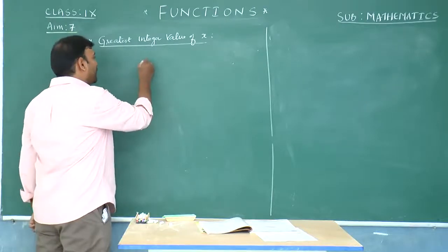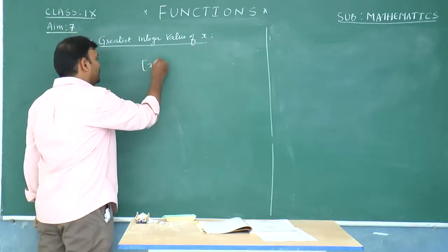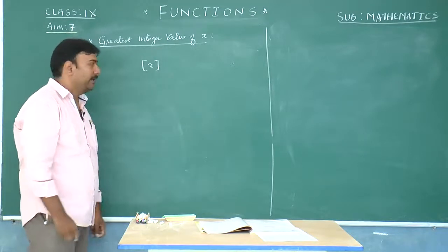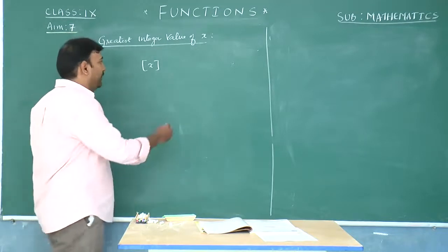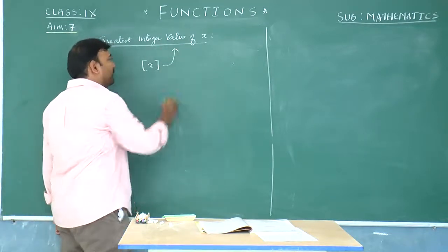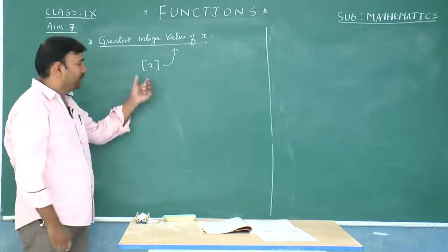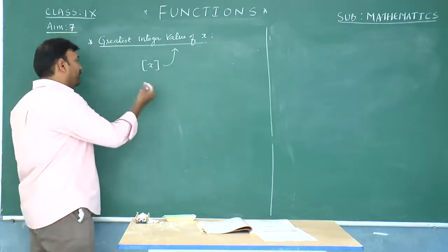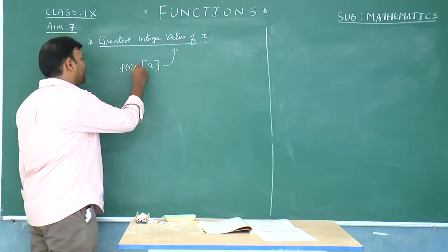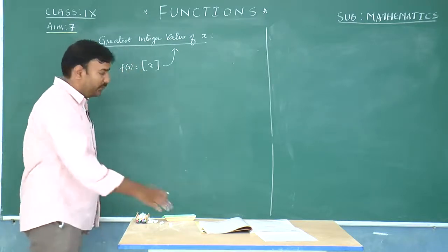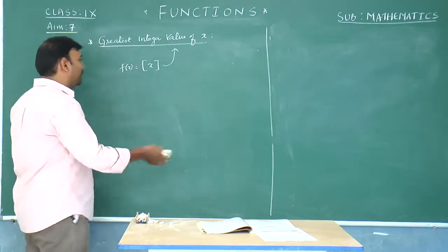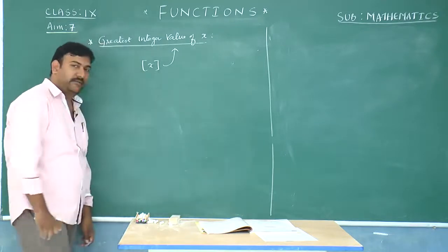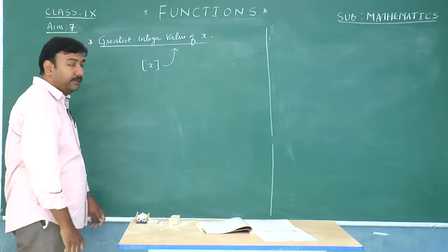The value of a real number x is denoted by step x or box x. This is the notation for the greatest integral value of x. A function of the form f(x) = step x is said to be a greatest integer function, which we will discuss later. First, let us know about the properties of the greatest integral value of a variable.